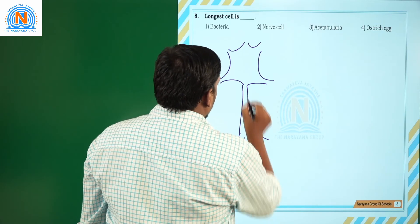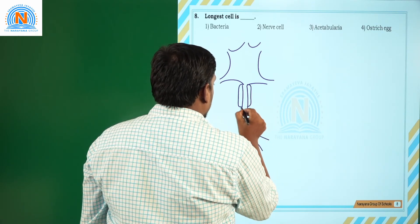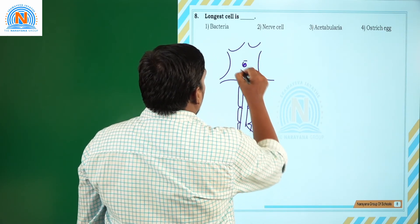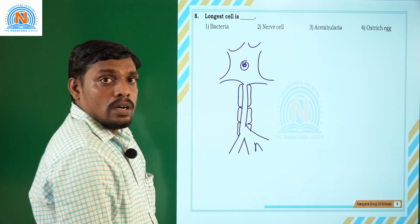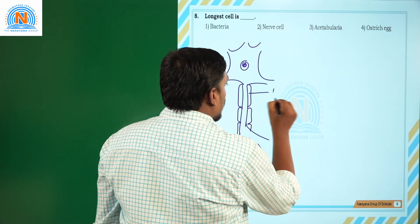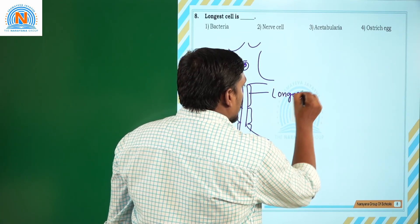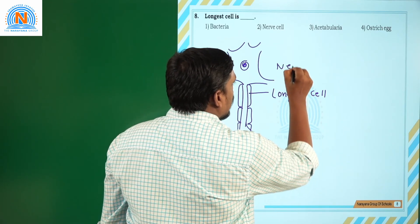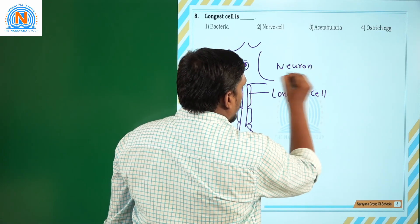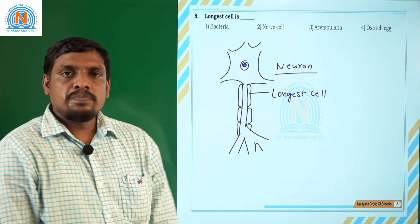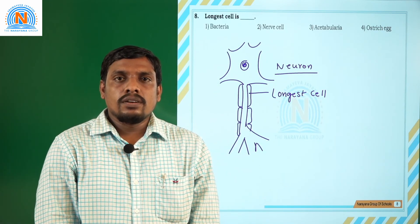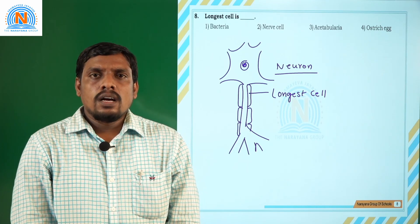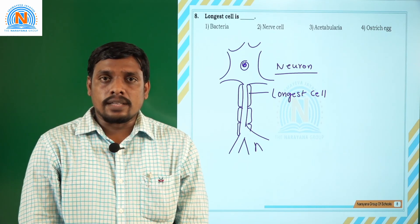The longest cell is the nerve cell, also known as a neuron. This is the assignment key for this assignment. Remaining assignment keys we will discuss later. Until then, have a nice day.